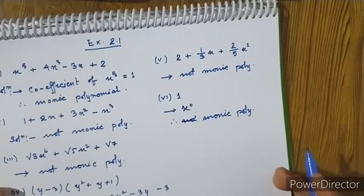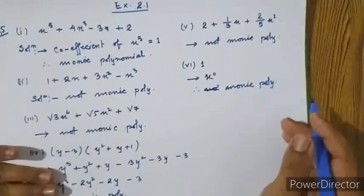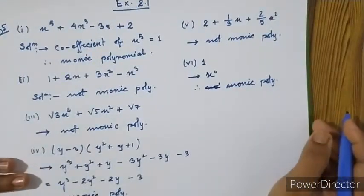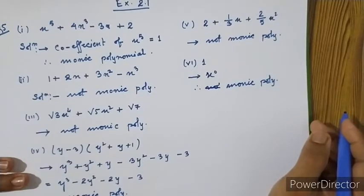Question number 6: classify the following as linear, quadratic, cubic, or biquadratic polynomial.